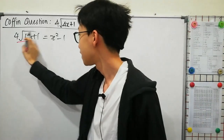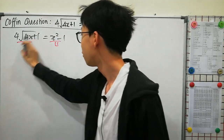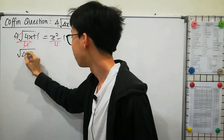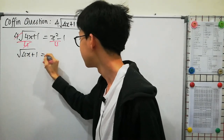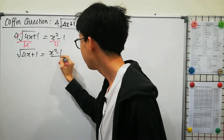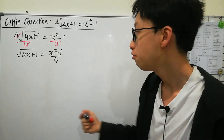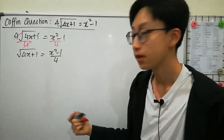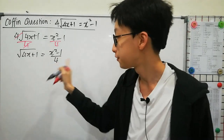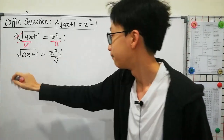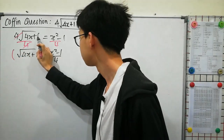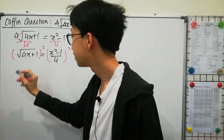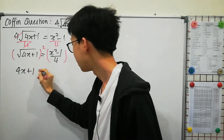Maybe the first step, we will just divide both sides by 4, so that the 4 and 4 can cancel. Our left-hand side will have a square root of 4x plus 1, and the right-hand side is x squared minus 1 over 4. Now we have a square root on the left-hand side and a square on the right-hand side. Maybe we try to square both sides to cancel this square root. On the left-hand side, we will just have 4x plus 1.